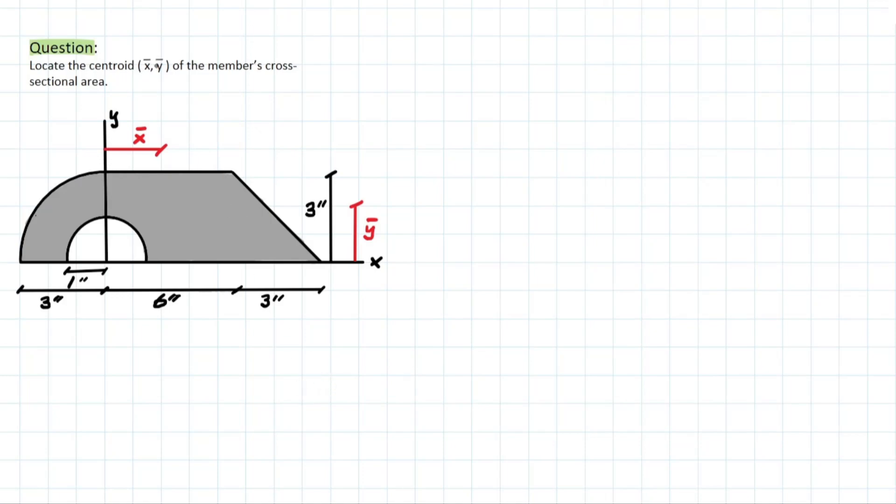Let's locate the centroid x bar, y bar of the member's cross-sectional area. So we have a composite shape here with our xy axis as a reference for where the shape is located, and we can see there's a couple of different shapes that we can quickly identify. We have a circle, which is actually representing a hole in this composite shape. On this side, we would have a quarter circle. Right here, we would have that rectangular shape, and then at the end, we have this triangular shape.